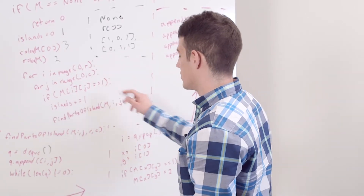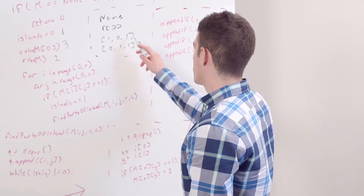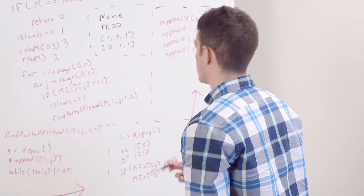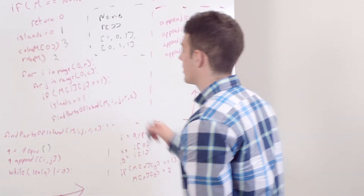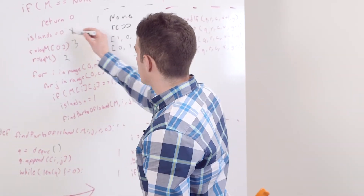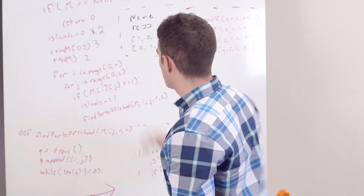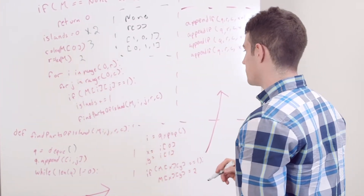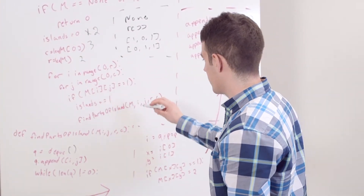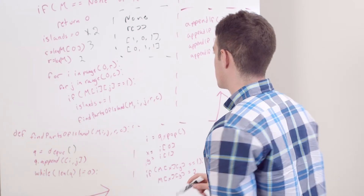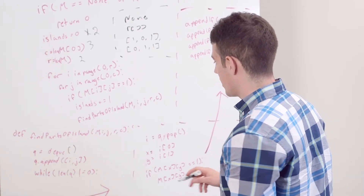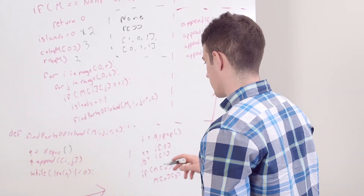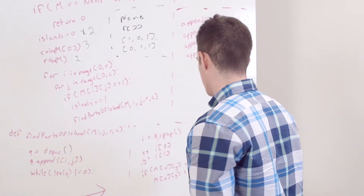It's at zero, so we don't do anything, we just go through the loop. Then I find a one, so I'm going to increment my island count again — this is now going to be two. I go through that and find the parts of the island. There actually are ones here, so I'm going to go ahead and add those.